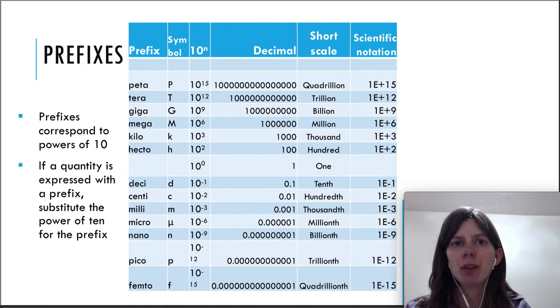Last thing I'd like to do in this video is go over prefixes. Sometimes in front of units you'll find prefixes. Prefixes correspond to powers of 10. In this table we have a lot of prefixes and most of them we're not actually going to use in this class. The most common ones that we're going to use is kilo, centi, and milli. You can see that they stand for a power of 10. Kilo stands for 10 to the third which is a thousand.